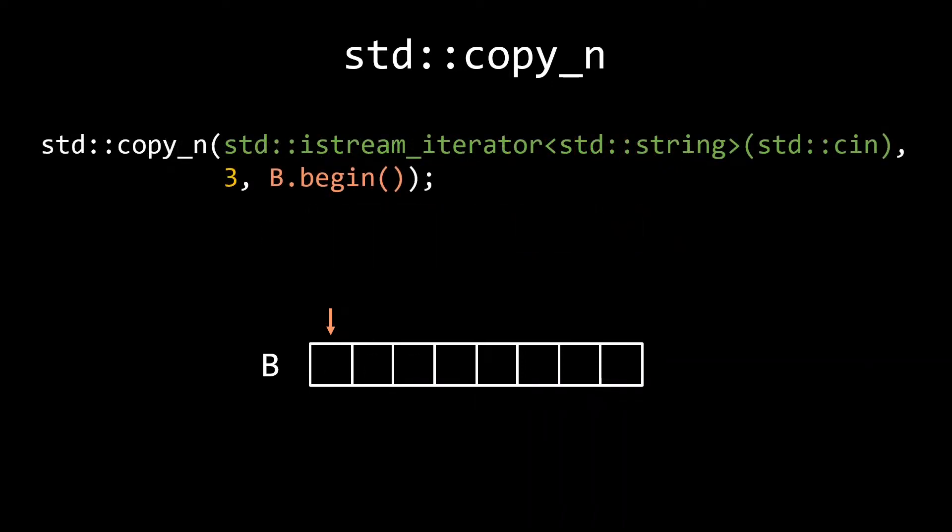There are actually things you can do with copy_n which don't work with a normal std::copy. An example is using an istream_iterator to read from standard input like this. Here we use copy_n to read the next three strings that are submitted through standard input. An operation that would not be possible with the normal std::copy. Because istream_iterator is not a random access iterator. And hence we cannot do arithmetic on it, like adding 3, to get an end iterator. If you want to know more about different iterator categories and operations they support, check out my video on that topic. There's a link in the description.